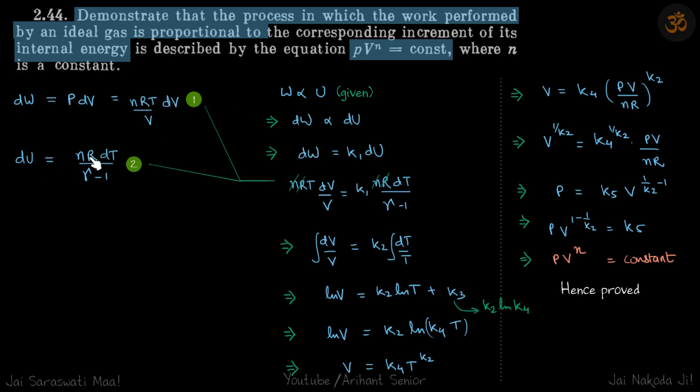So DU is NR DT by gamma minus 1. So now we do that. DW is proportional to DU, or we can say DW is some constant K1 times DU.